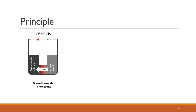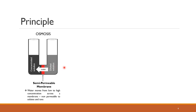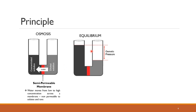Coming to the principle behind reverse osmosis — before you start with reverse osmosis you should know what osmosis is. Osmosis is a naturally occurring process. When you have a concentrated solution and a dilute solution across a semi-permeable membrane, the water will always flow from a region of lower concentration of the solute to the region of higher concentration of the solute across the semi-permeable membrane.